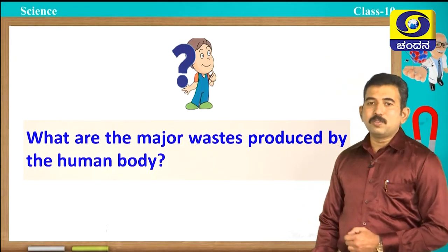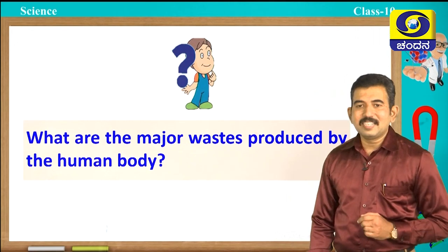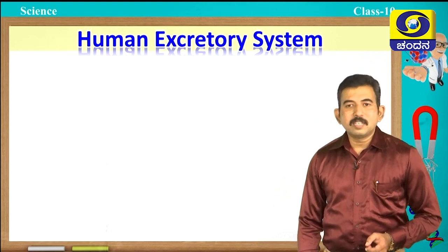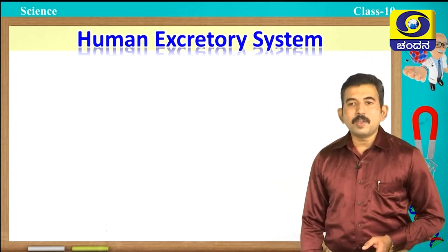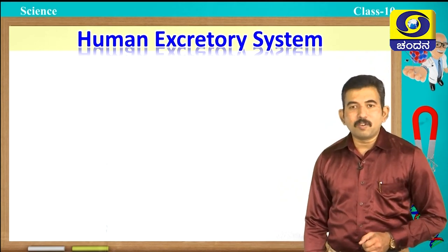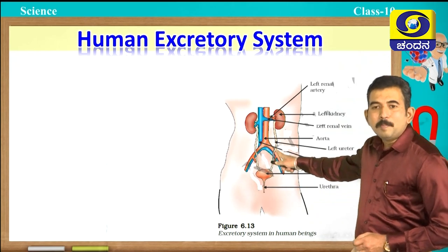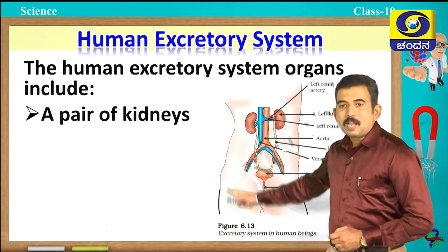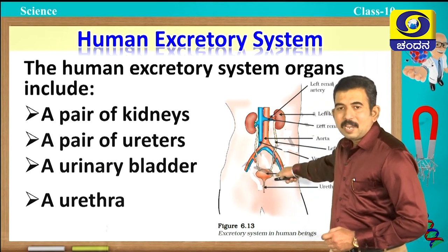What are the major waste products produced by the human body? Carbon dioxide and urea are the major waste products. Our excretory system organs include mainly a pair of kidneys, a pair of ureters, a urinary bladder, and urethra. You can observe this in the picture of the human excretory system.